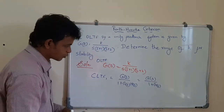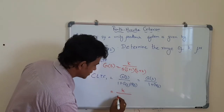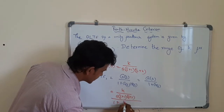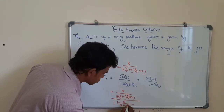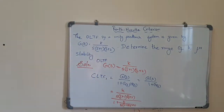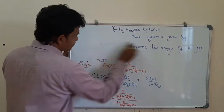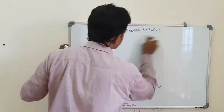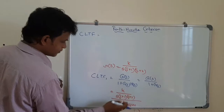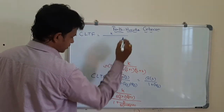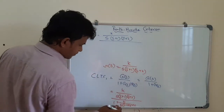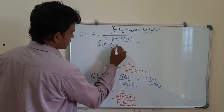The closed loop transfer function is G(s) equal to k divided by s into (s+1) into (s+2), divided by 1 plus k divided by s into (s+1) into (s+2).